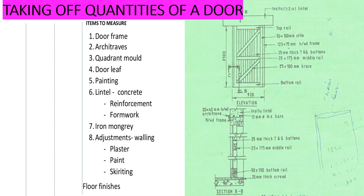We are starting by listing the items to measure. We have the door frame, architrave, quadrant mould, door leaf, painting, linto. We have the concrete, reinforcement, and then formwork that is holding the concrete. We have iron mongery, adjustments, plaster, paint, skirting, and then we have floor finishes.